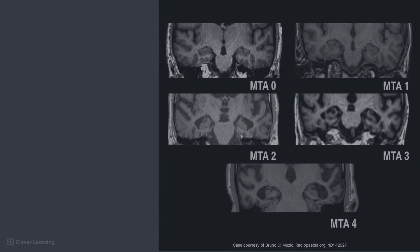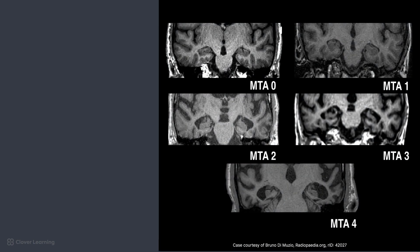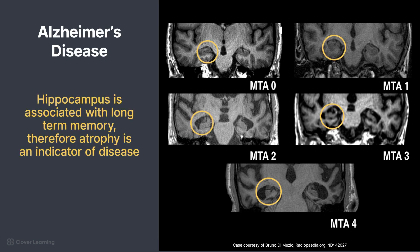MRI plays a critical role in the diagnosis and monitoring of Alzheimer's disease. One of the key structures with this disease is the hippocampus, located in the temporal lobe, which is associated with long-term memory. Therefore, atrophy in this area is an indicator of the disease. A medial temporal lobe atrophy score, or MTA, is used to grade the amount of atrophy present. A T1-weighted volumetric sequence angled in relation to the hippocampus is most effective to see the amount of atrophy of the tissue.